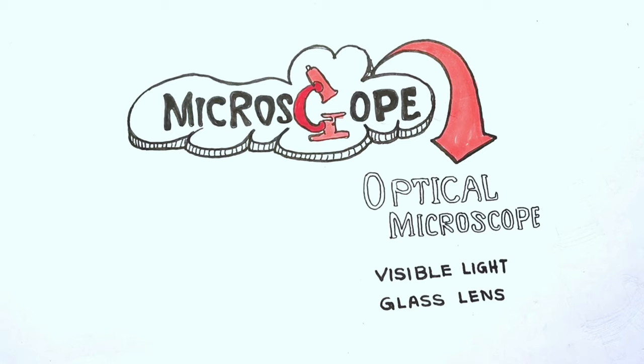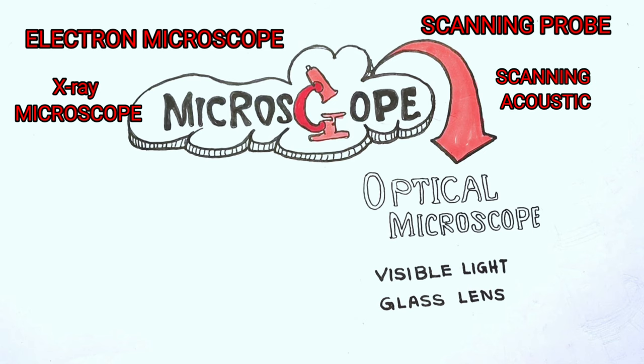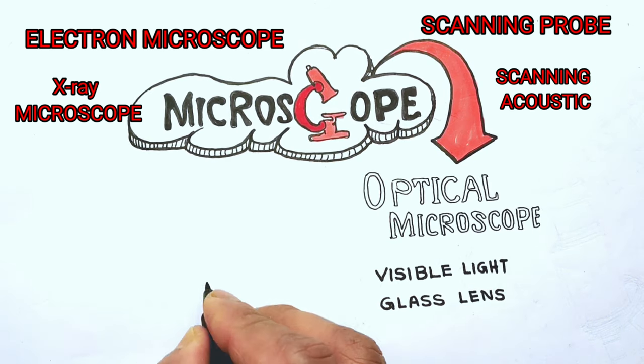Although optical microscope is the topic of the video, let me inform you that to meet different needs of scientific research at different times, many advanced types of microscopes were developed like electron microscope, x-ray microscope, scanning probe, scanning acoustics, etc.